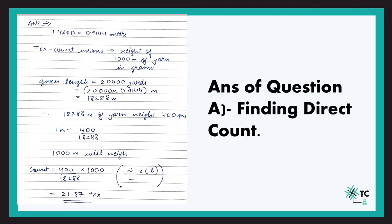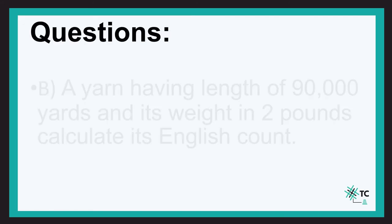So 18,288 meters of that yarn weighs 400 grams. Using the unitary method, 1 meter weighs 400/18,288 grams. Since we need the weight of 1000 meters, the count = (400 / 18,288) × 1000, which replicates our formula W/L × unit length. Since we want the count in tex, we use 1000 meters as the unit length. If we needed denier, we would use 9000 meters. The answer comes out to be 21.87 tex.